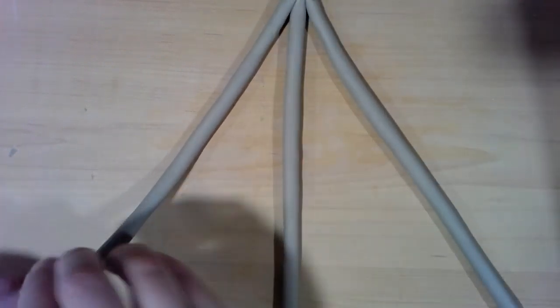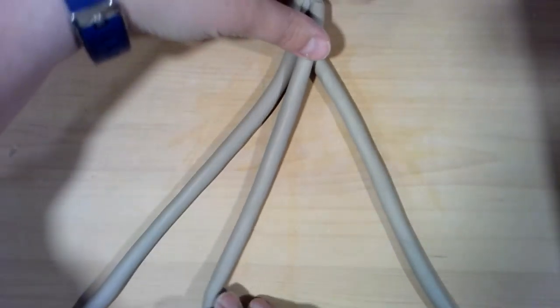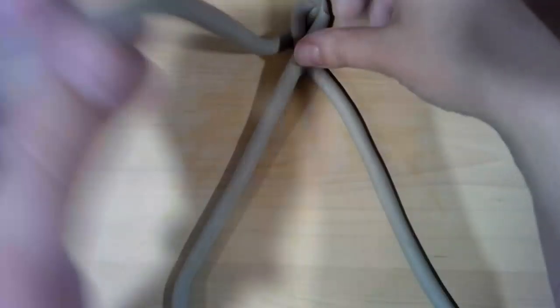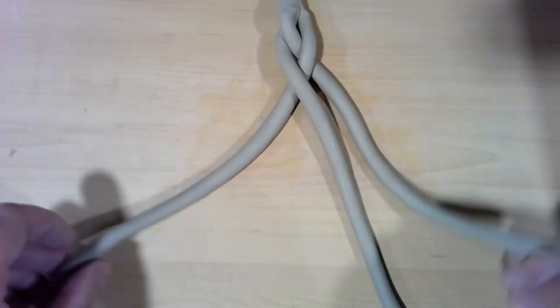You have one of your coils in the middle, one on left, and one on the right. You're going to take the one on the left and bring it to the middle, then you're going to take the one on the right and bring it to the middle, then the one on the left and bring it to the middle, and then the one on the right and bring it to the middle.